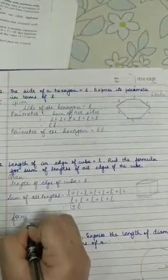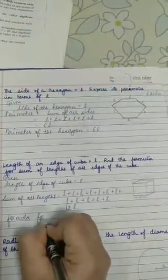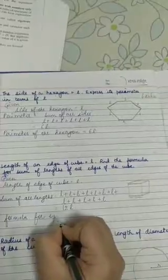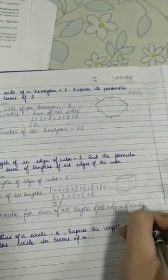How can we write this as 12L? So formula for sum of all length of all edges of a cube will be equal to 12 into L or 12L.